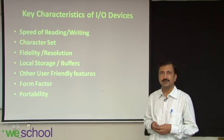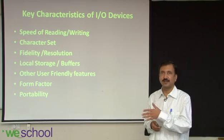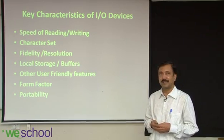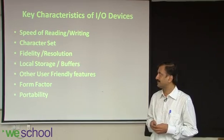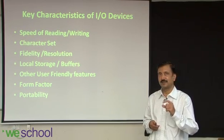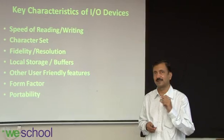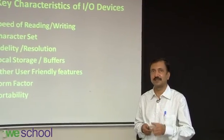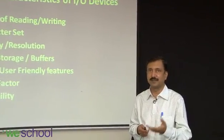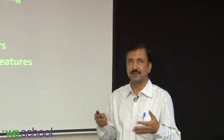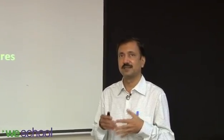One is the speed at which you can read or write, depending on whether it's input or output. The character set — what kind of characters is it capable of reading, or what kind of characters can it display or print? Is it the alphabets? Is it numerals? Or is it a mix of those? Or is it graphics that it can print?